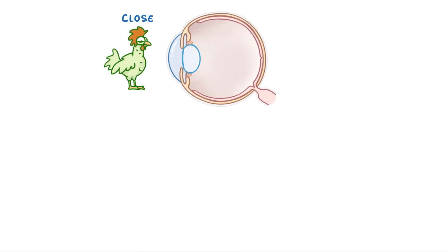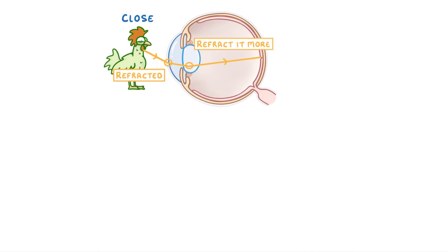So if we start with an object that's close to us, the light from its surface has to be refracted a lot. Which means that even once it's been refracted by the cornea, it still needs a powerful lens to refract it some more. To be able to refract the light enough, the lens needs to be short and fat, so that it's more curved, which means that it can refract more strongly.